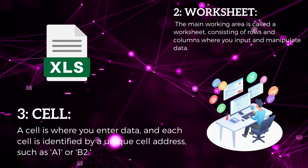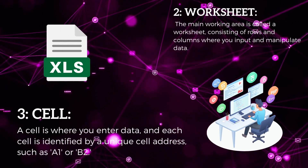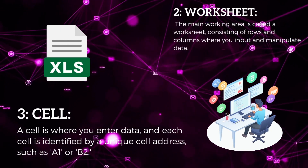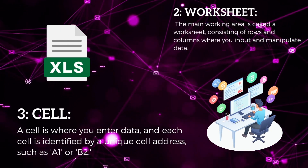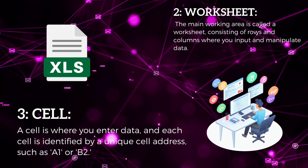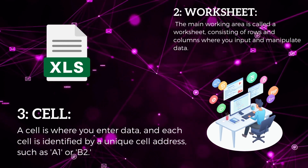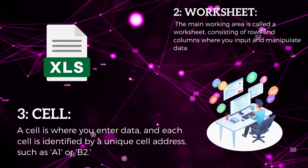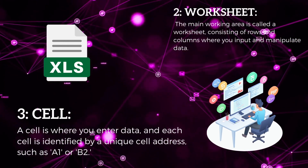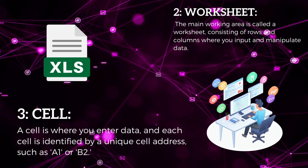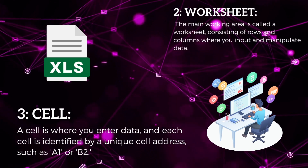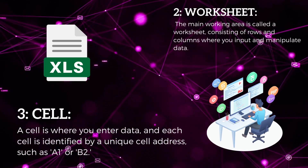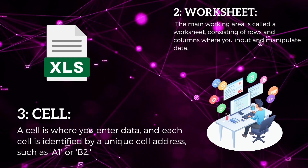Worksheet: The main working area is called a worksheet, consisting of rows and columns where you input and manipulate data. Cell: A cell is where you enter data, and each cell is identified by a unique cell address, such as A1 or B2.